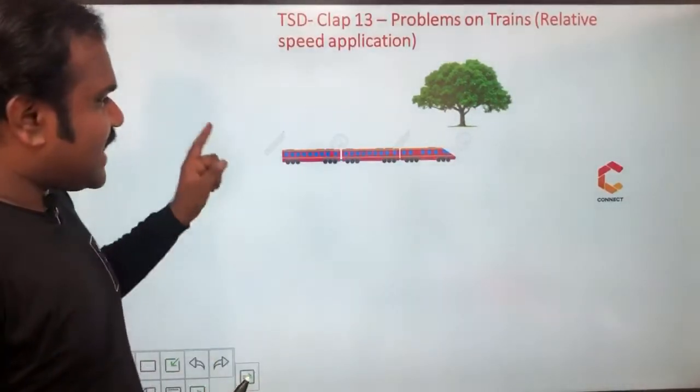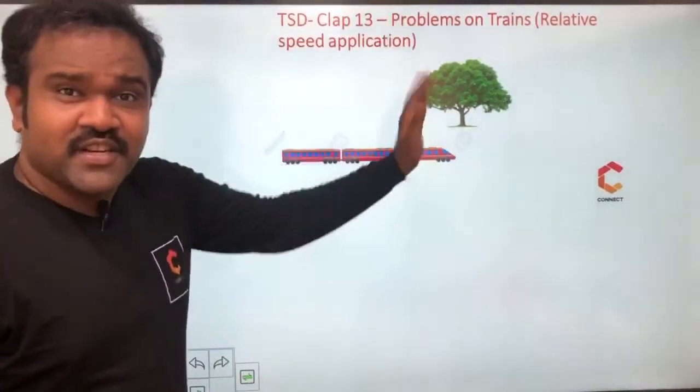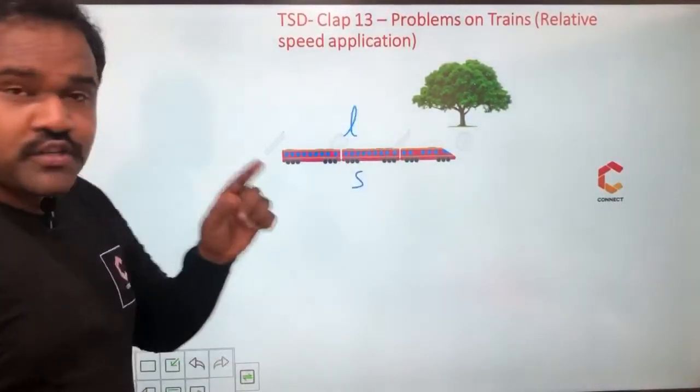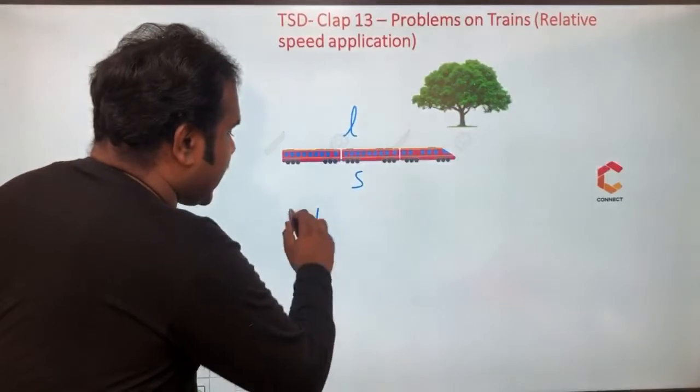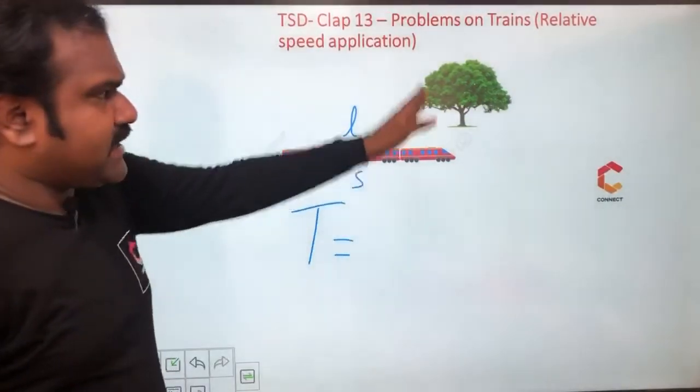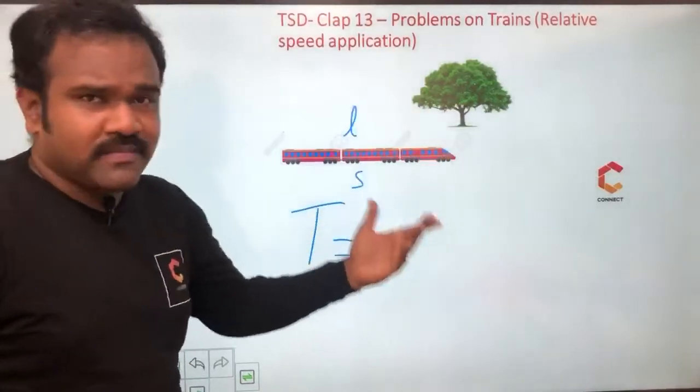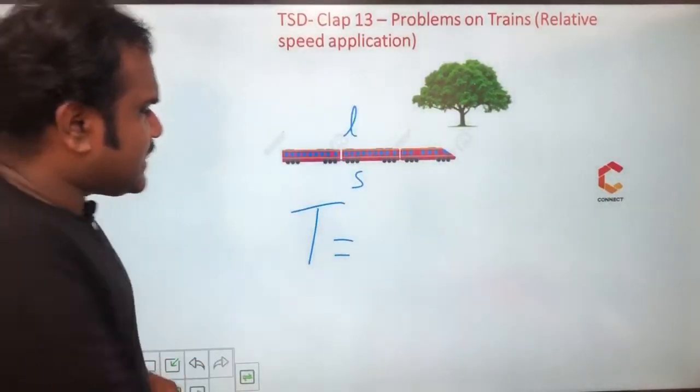First case is a train crossing a stationary object without length. A train has got a length of L and a speed of S. Now the question goes like this, what is the time taken to cross this object? Be it a tree or a stationary flag pole or electric post something like that. So time taken is distance by speed.